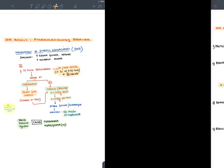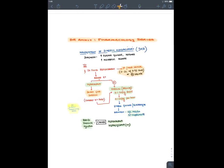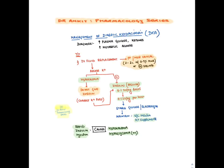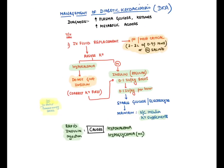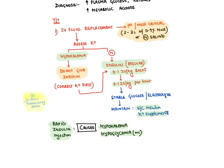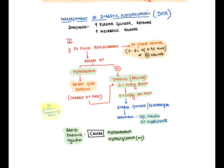Insulin is the drug of choice for long-term control of diabetes, diabetic ketoacidosis, and hyperosmolar hyperglycemic coma. In managing DKA, the mainstay of treatment is always fluid replacement first. Then assess potassium level. If there is hypokalemia, do not give insulin because insulin itself causes hypokalemia — first correct potassium, then give insulin. We give a bolus of 0.1 international units per kg and then maintain the same dose per hour. Never give insulin rapidly as it may lead to hypokalemia and hypoglycemia.